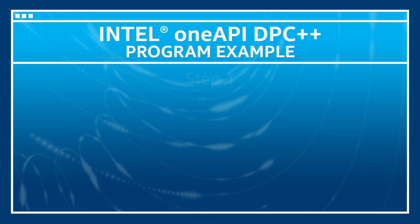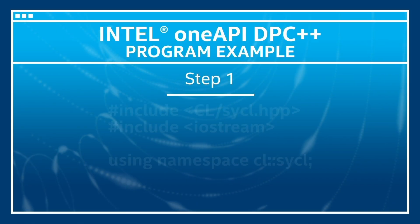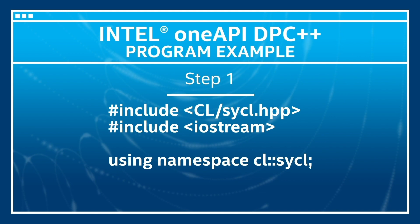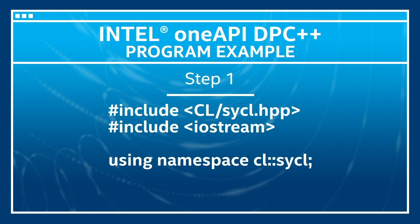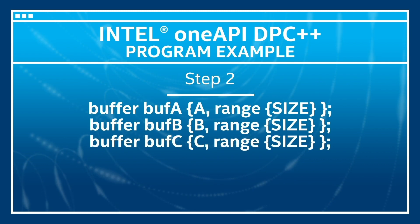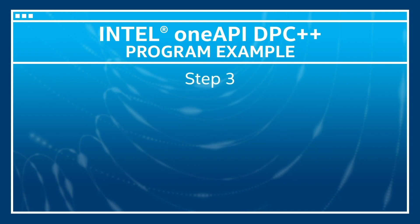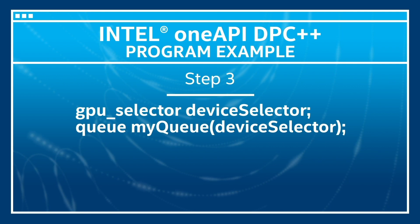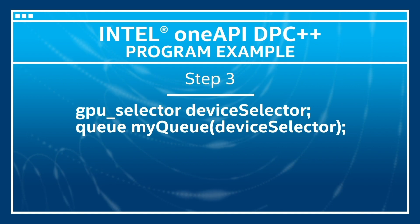Now let's look at a DPC++ program which performs an addition of two vectors on a GPU. Step 1 is to include the language headers and namespace, providing the templates and class definitions to interact with the runtime library. Step 2 is to create buffers, which will allocate the memory to store the data.